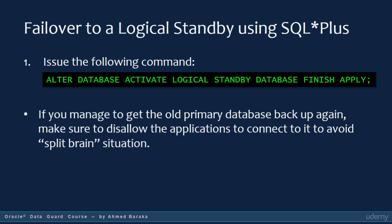In case of a logical standby database, a single command will do the trick: ALTER DATABASE ACTIVATE LOGICAL STANDBY DATABASE FINISH APPLY. This statement stops the remote file server process, applies remaining redo data in the standby redo log file before the logical standby database becomes a primary database, stops SQL apply, and activates the database in the primary database role.